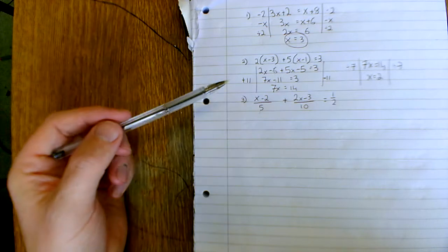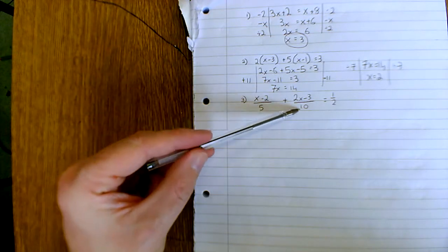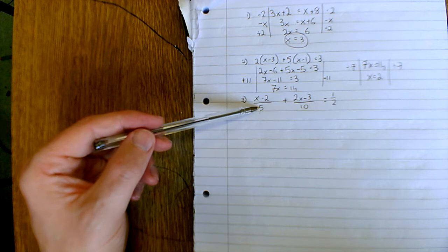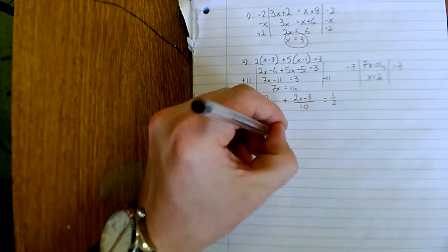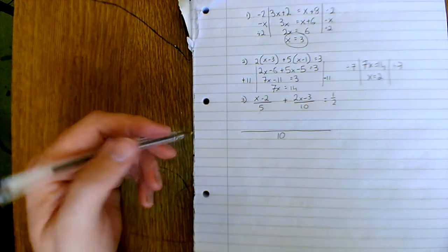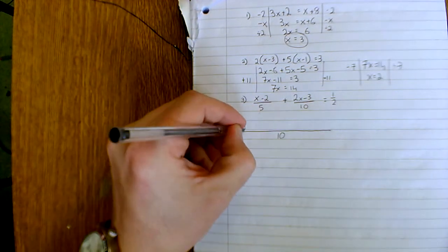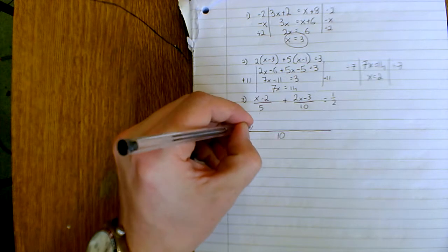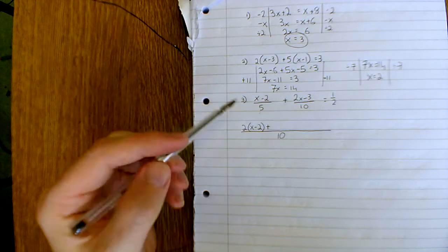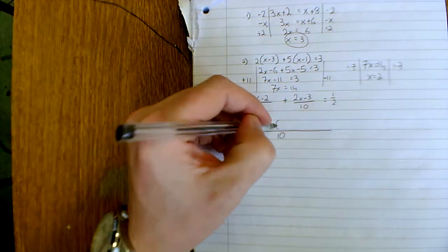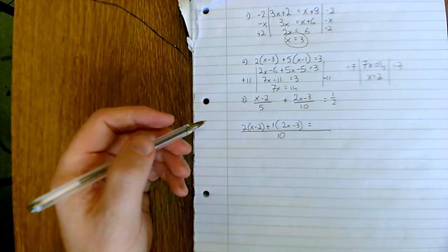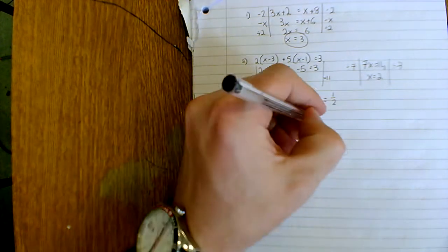Fractions, they're different denominators. Can we find a common denominator between 5, 10, and 2? That'll be 10, because 5 goes into 10, 10 goes into 10, and 2 goes into 10. So how many times does 5 go into 10? Twice, and it's x minus 2 on top. Plus there. How many times does 10 go into 10? Once, and we've got 2x minus 3 on top. Equals, 2 into 10 goes 5 times, and a 1 on top.